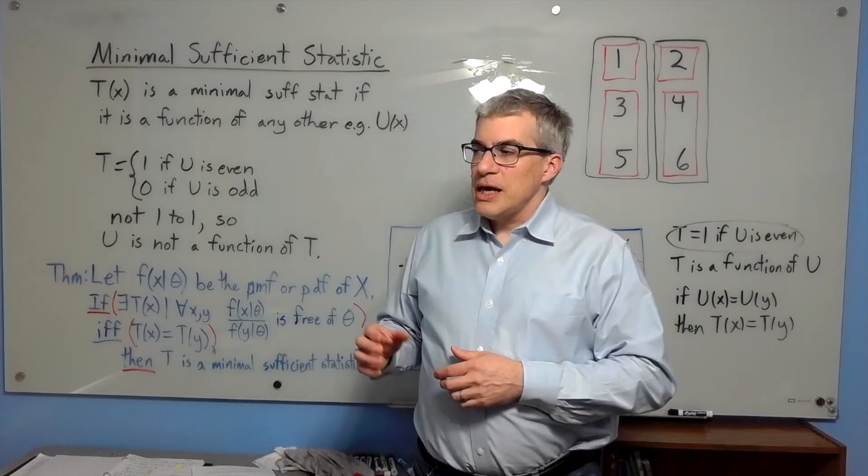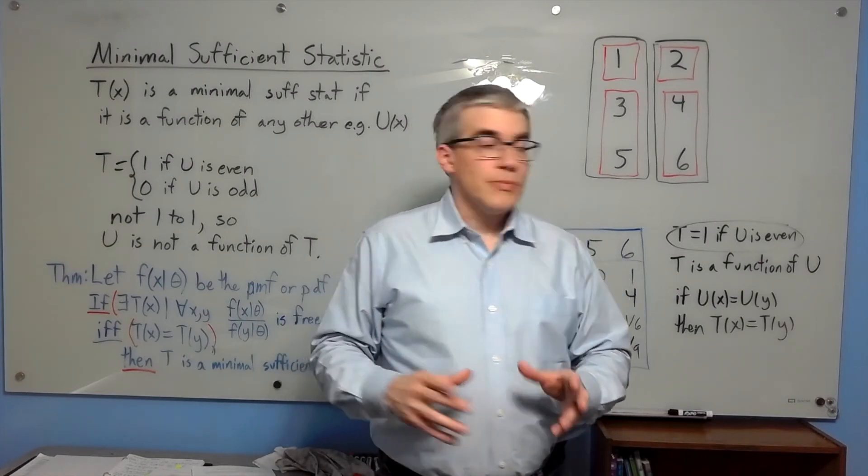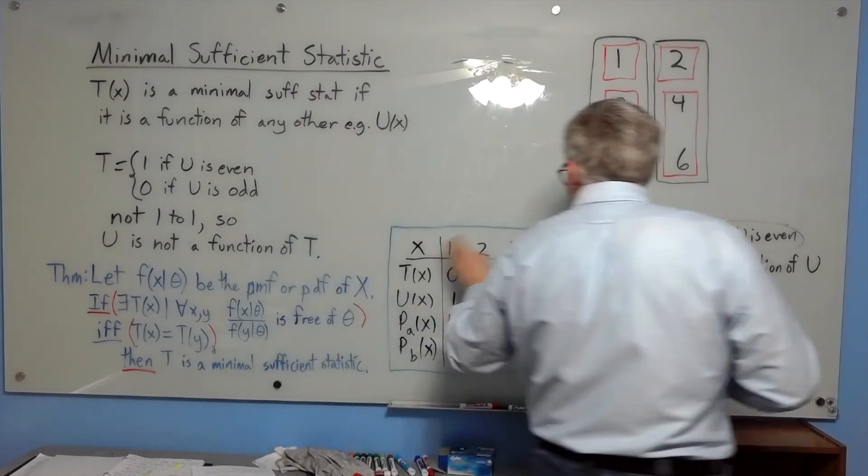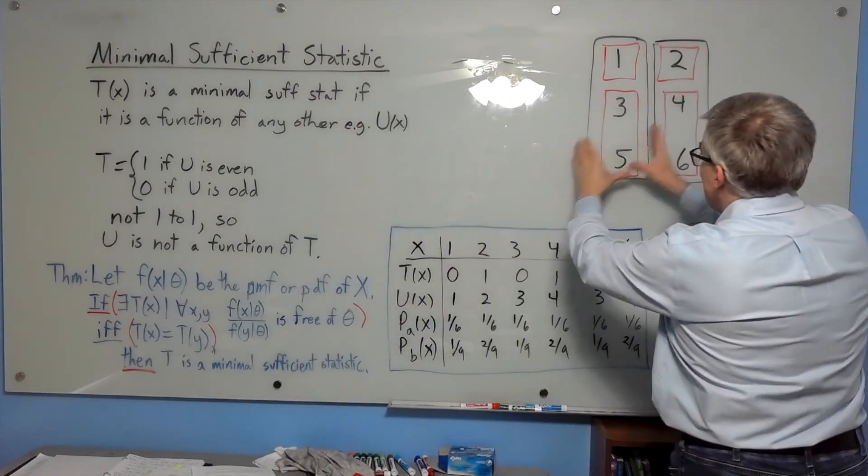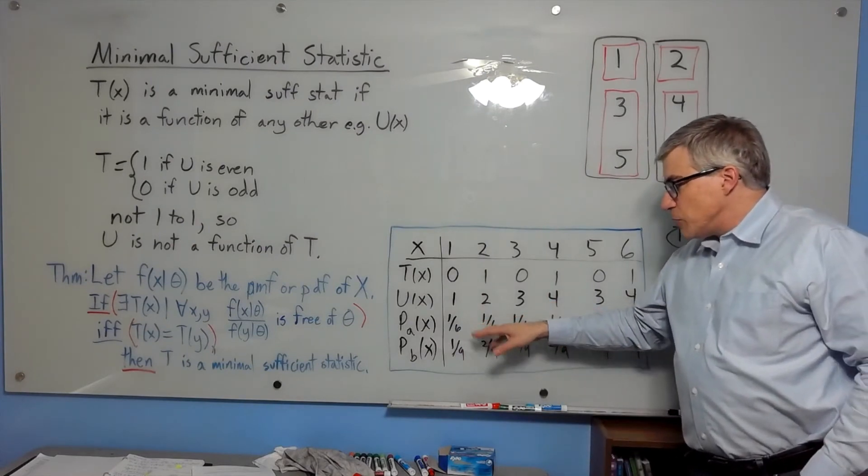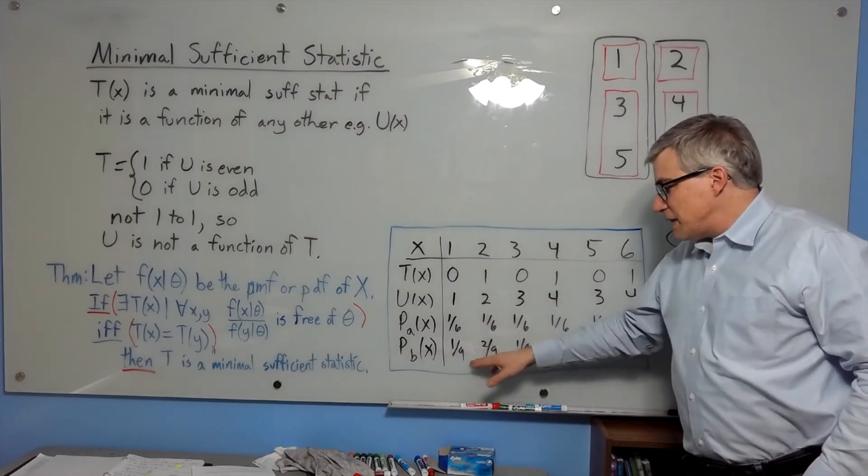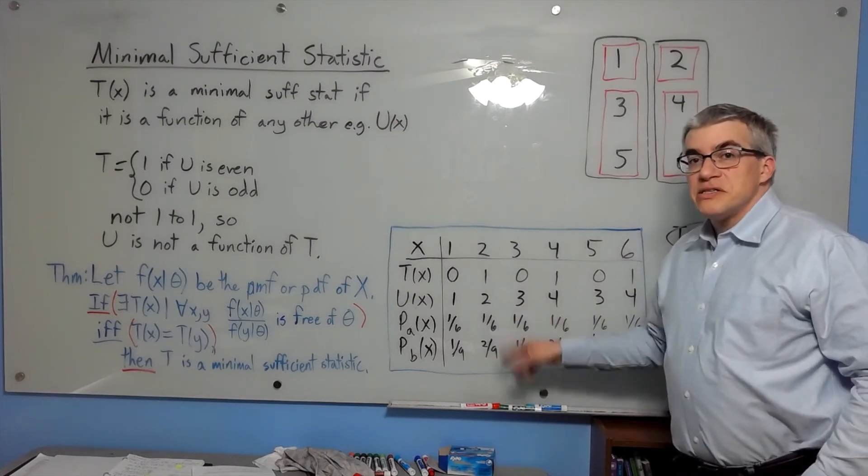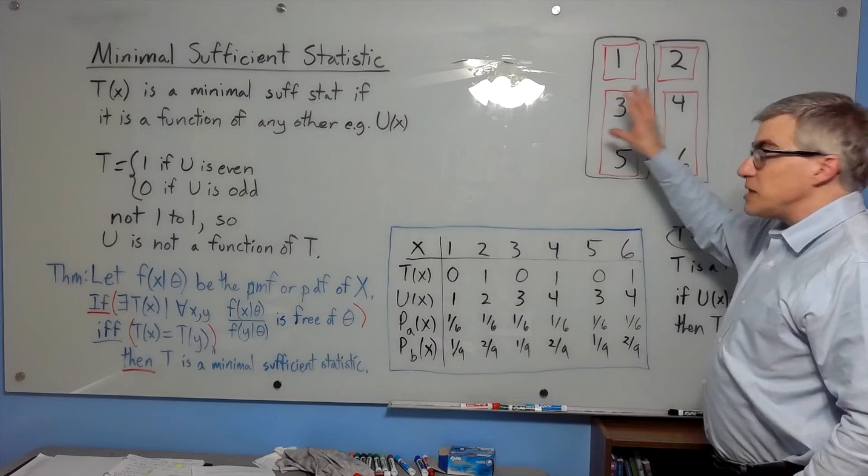So how do we judge that? Remember that any of these statistics is a partition, right? We have the numbers 1 through 6, and the t statistic partitions it into odds and evens. Remember, conceptually, we're trying to distinguish between a die that's fair and a die that treats the odds and evens differently. If we're going to be able to make this distinction, we have to separate the odds and the evens.